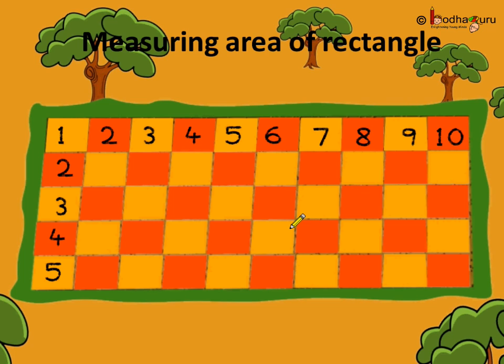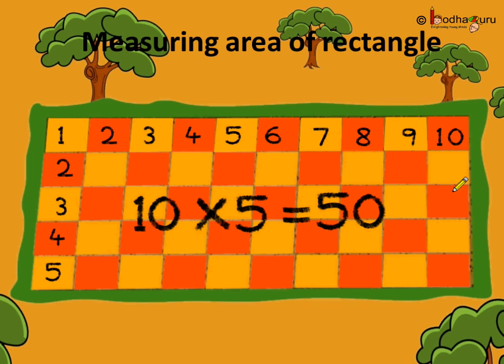So, a total of 50 square tiles were used to fill up the rectangle area. The area is 10 multiplied by 5 which is equal to 50. So 50 square tiles were used. Now, what is the unit for the area?